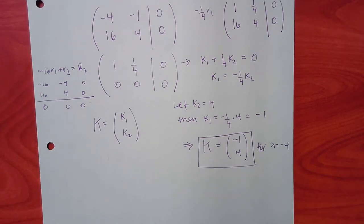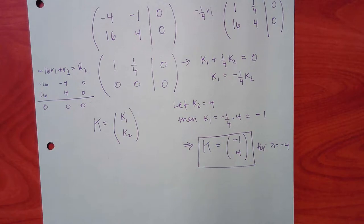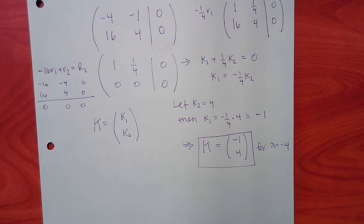We found lambda and the corresponding eigenvector. If we get two or three eigenvalues, we'll have two or three K vectors — make sure you track which K goes with which lambda. This first example had just one eigenvalue to keep it simple.